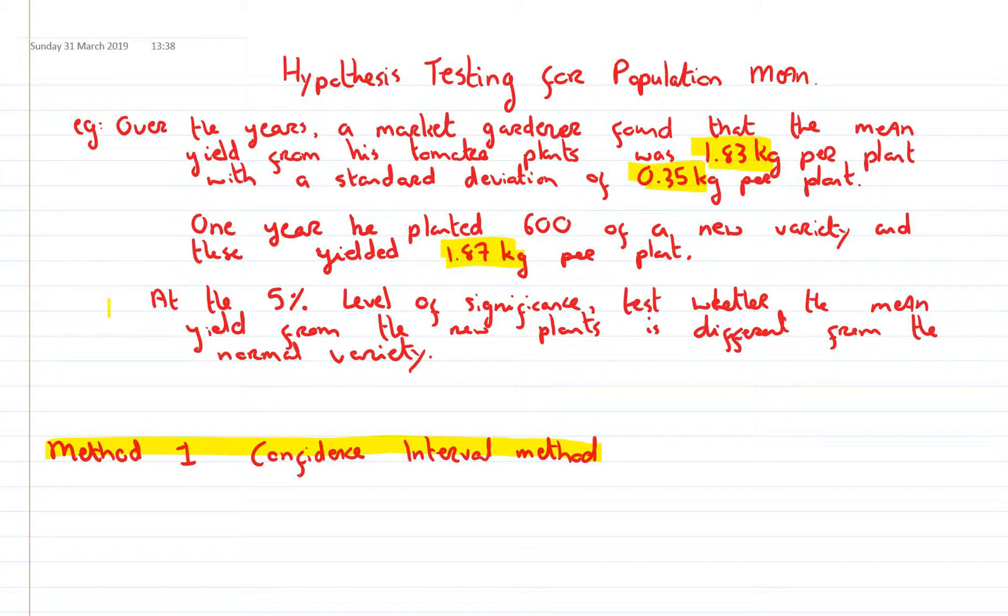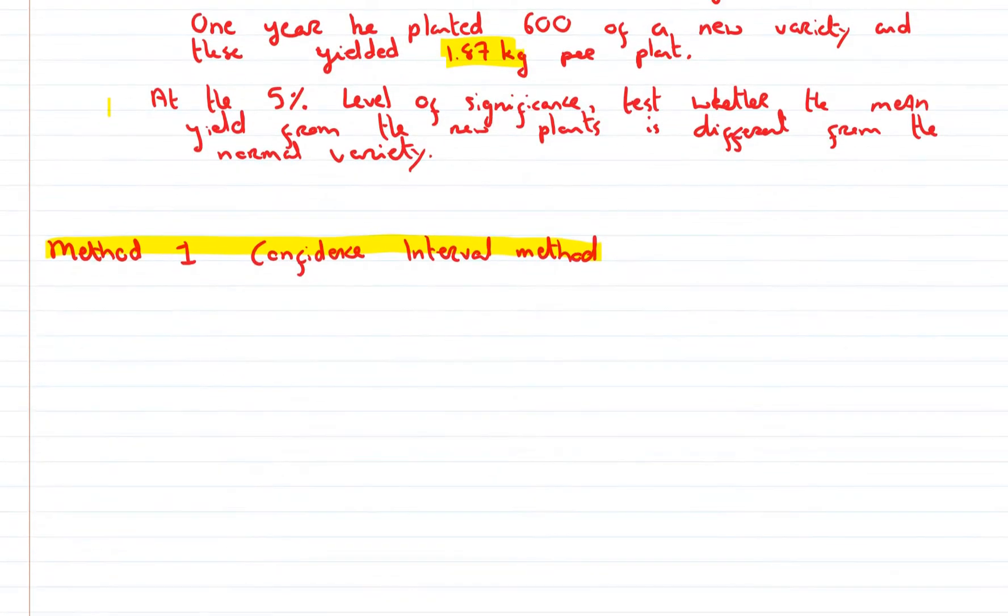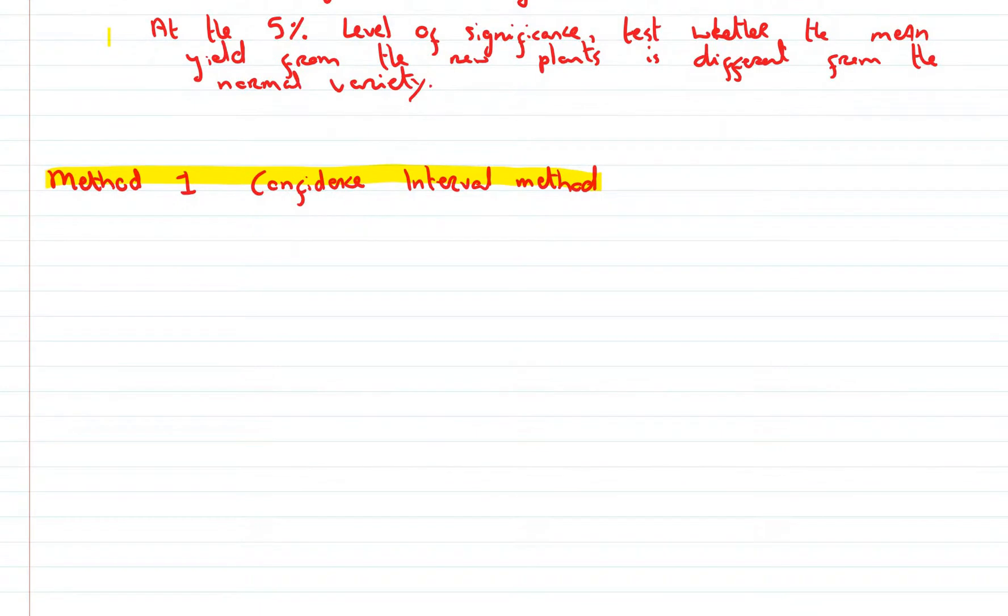So we want to check if the new plants have a different mean. This is the first method I'm going to use and it's the confidence interval method.